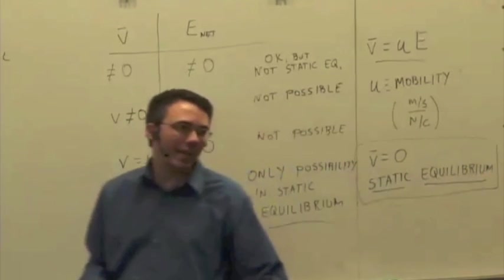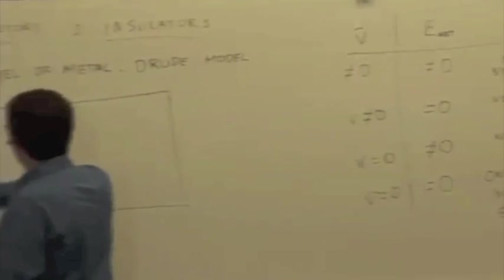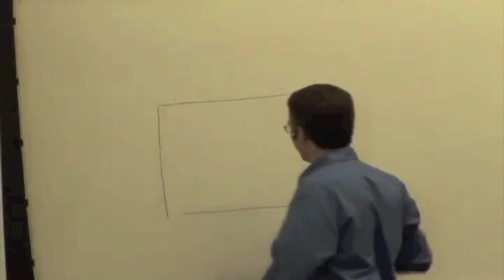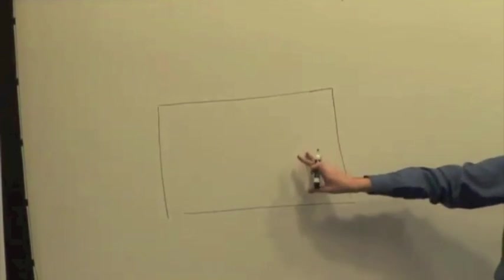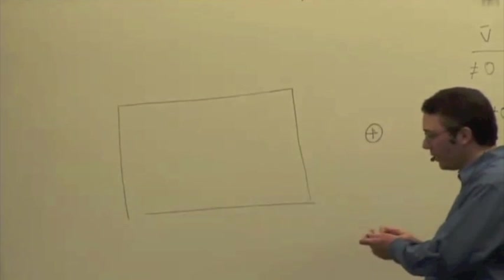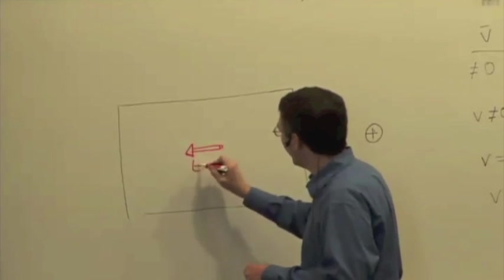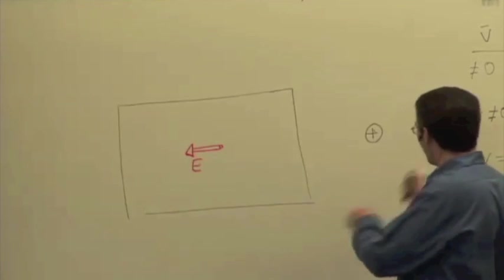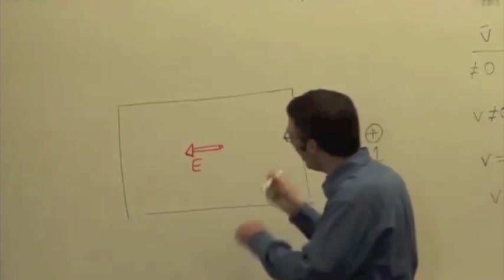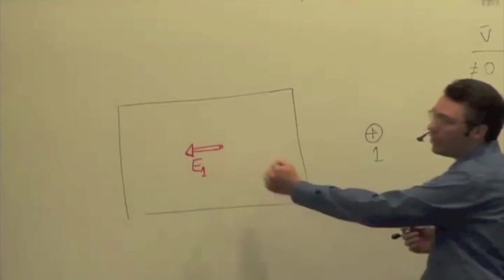And we say, wait a minute. How can that be possible? Because let's say we have this situation. Here's a neutral block of metal. I bring a positive charge near this neutral block of metal. And now this positive charge is applying an electric field. So I'll call this charge one just to distinguish. And so this is E1 due to charge one. What's going to happen to the mobile charges in here? They're going to shift, right? And so the negative charges,